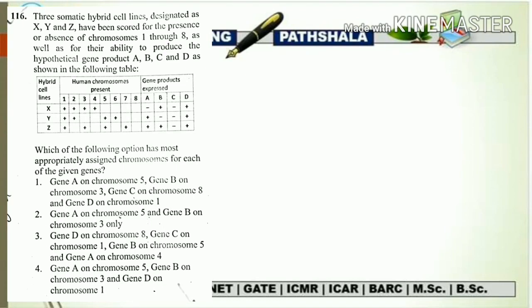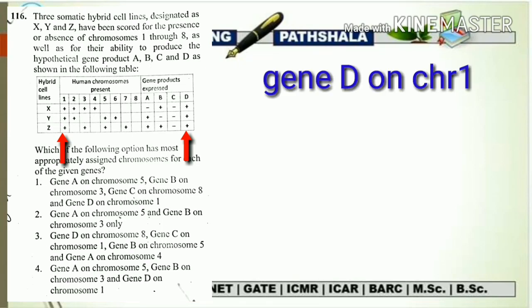Chromosome number 1 is going to show its presence in all three of the hybrid cell lines X, Y, and Z, indicated by a plus sign. If you tally this overall condition with the gene product, you can see that gene D also shows a similar pattern — it is present in all three hybrid cell lines. So from here we can conclude that gene D is present on chromosome number 1.